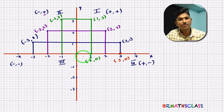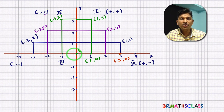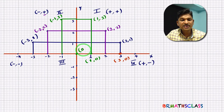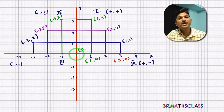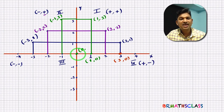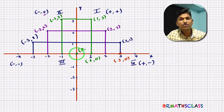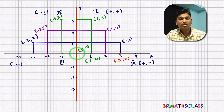Now let's understand why the origin is (0, 0). The x-coordinate is the perpendicular distance from the point to the y-axis. The origin is on the y-axis, so there is no distance — its x-coordinate is 0. The origin is also on the x-axis, so the perpendicular distance from the point to the x-axis is also 0 — its y-coordinate is 0. That's why the coordinates of the origin are (0, 0).